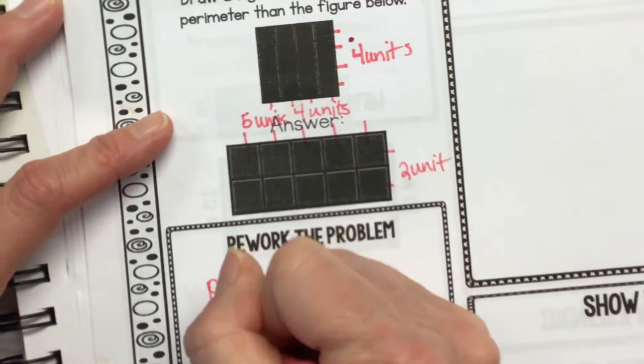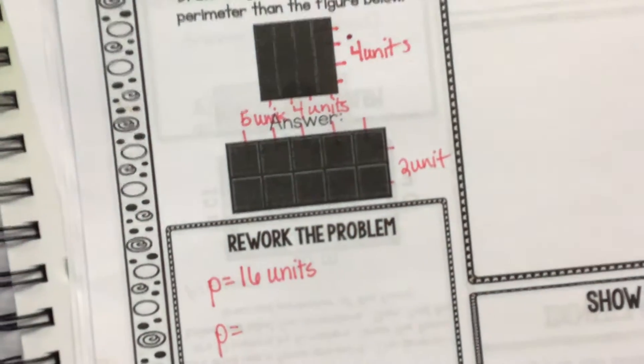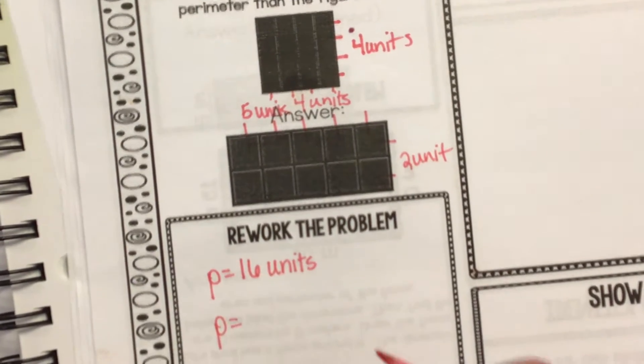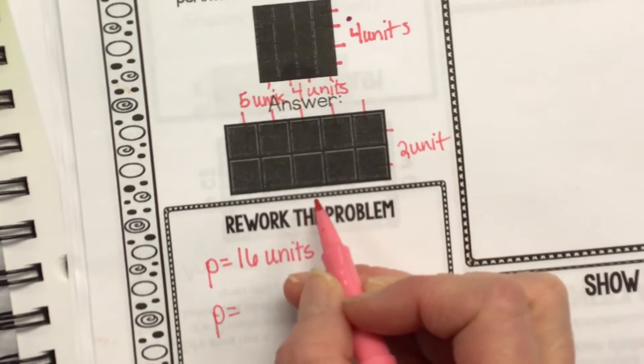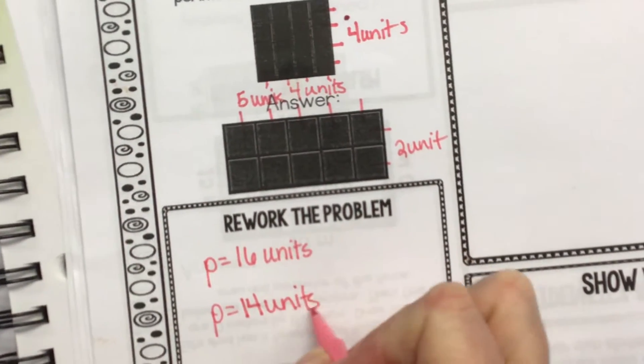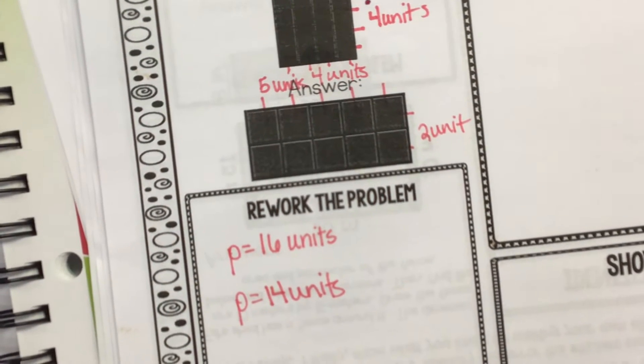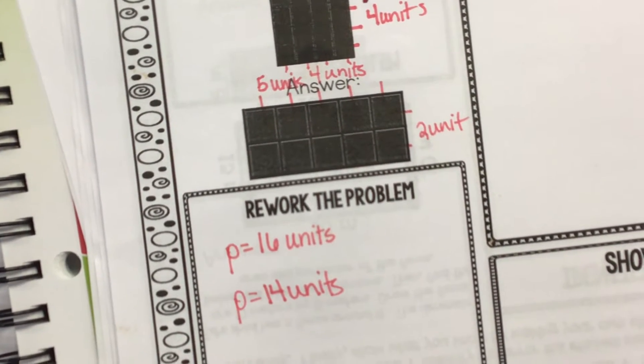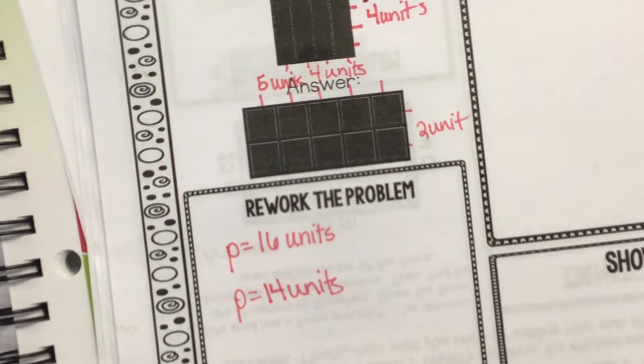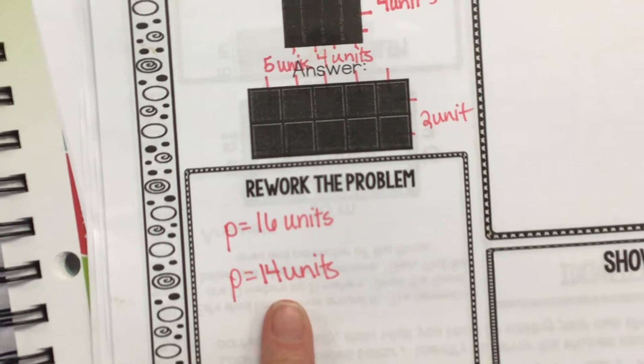Five units by two units. So, is it bigger? No. So, what should the person have done? They needed to make a shape with what perimeter? More than 16. Could have been 18, could have been 20.